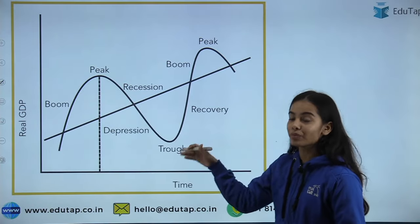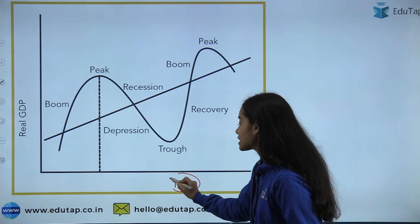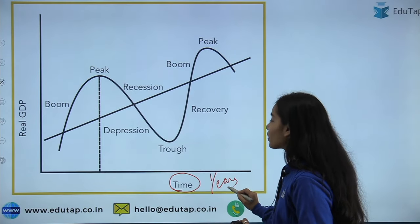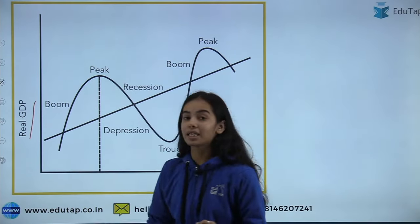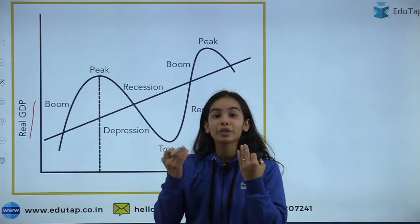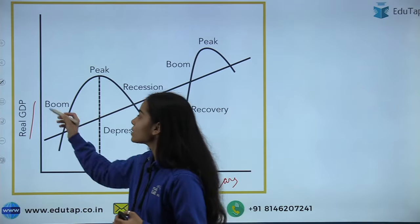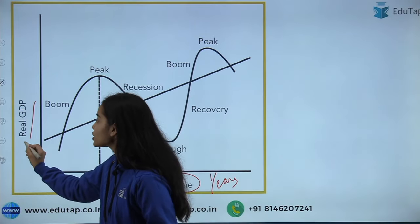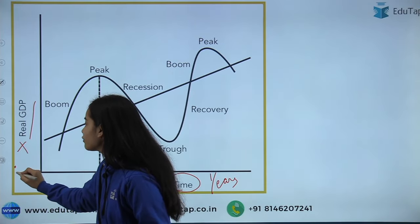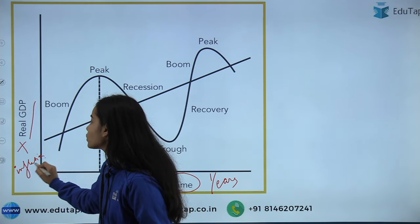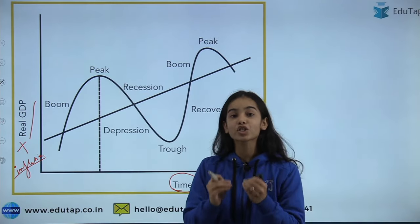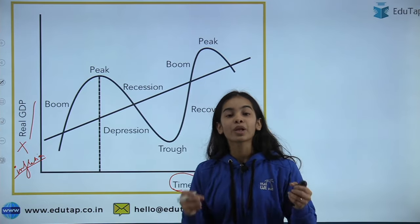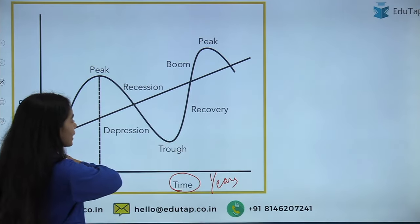Here you can see the business cycle graph. On the x-axis we are taking time, measured in years, and on the y-axis we are taking real GDP — that is, the value of goods and services produced in the economy. Real GDP is different from nominal GDP because in real GDP we do not include inflation, so it tells us the actual value of goods produced in the economy.